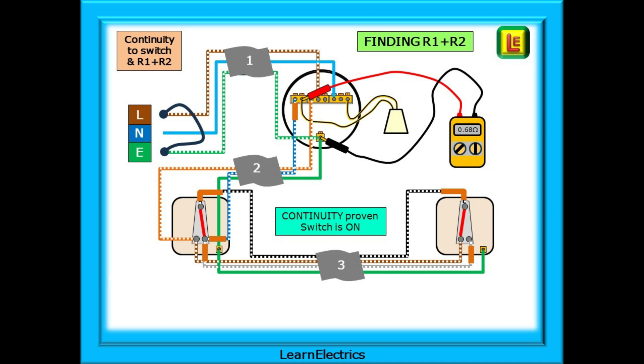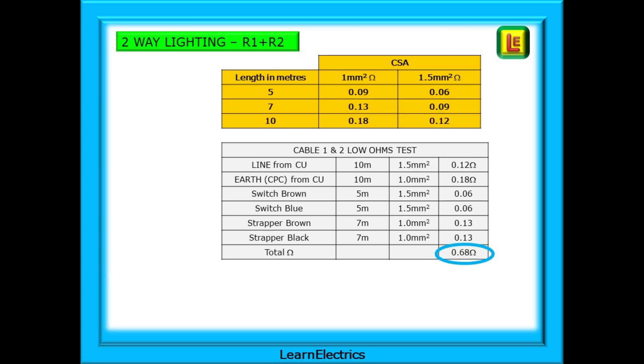And this is also R1 plus R2 for the test certificate. If we now operated the second switch we would lose continuity. And to get continuity back we should operate the first switch again. On, off, on, off. And the sort of readings that we should expect are shown here. Pause the video and make sure that you understand.